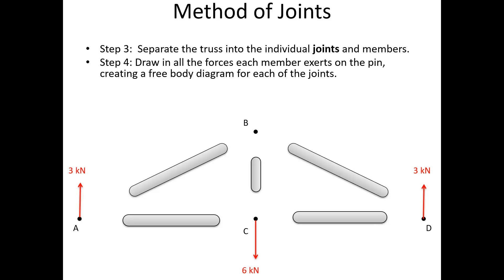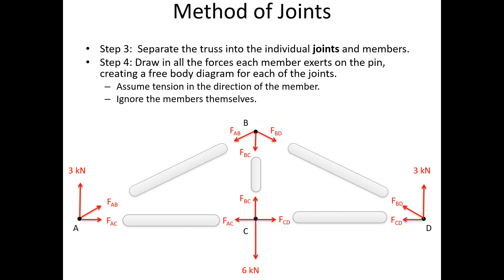Alright, so next, we're going to draw in all the forces that each member exerts on the pin, creating a free body diagram for each of the joints. So we're going to assume tension in the direction of each member. So I'm going to replace all the members with the forces, and I get rid of the members in my diagram. So I've drawn in force AB going from A to B in my diagram here. And so now what I have is a bunch of free body diagrams of the pins in my pin joints.